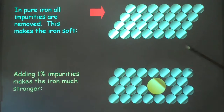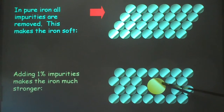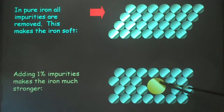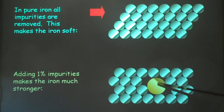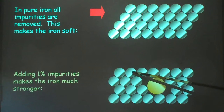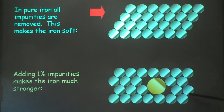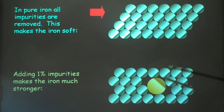If we make an alloy, we disrupt the structure with a different element — carbon, if it's in steel. The disruption of the structure means the layers can't slide over each other, and it makes it stronger and harder.